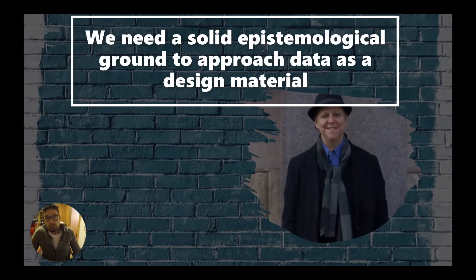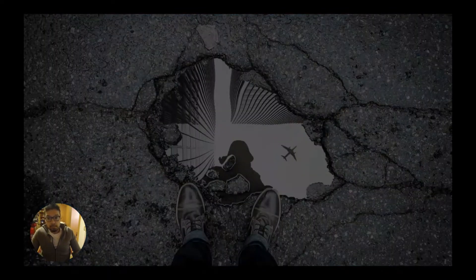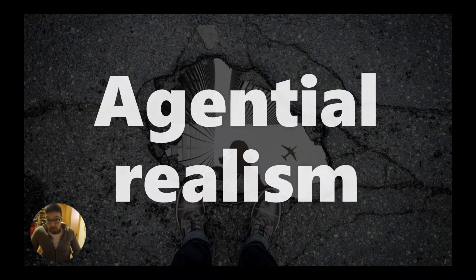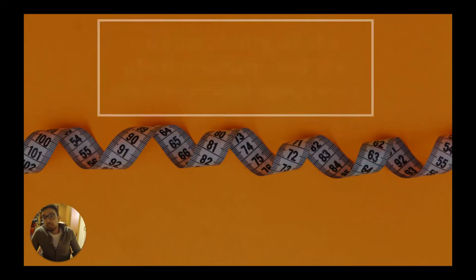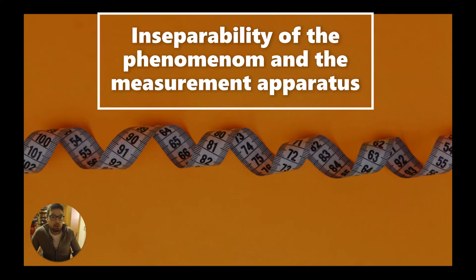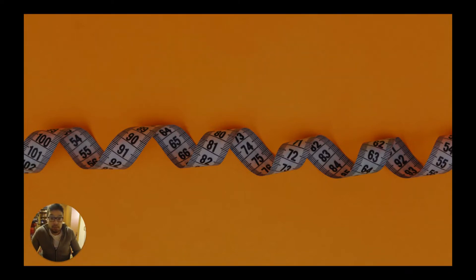In seeking an onto-epistemological ground for proposing a designerly way of approaching data as a material, we turn to Barad. Barad's agential realism offers a potential alternative to the conundrum of whether the outside world can be reflected and mirrored, instead pointing at the contingency of all human activities, instruments and observations, and how these are implicated in defining the phenomenon of interest.